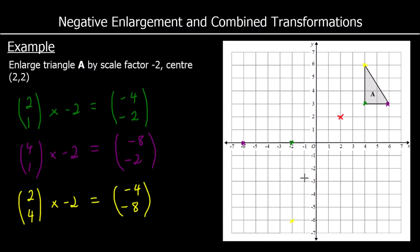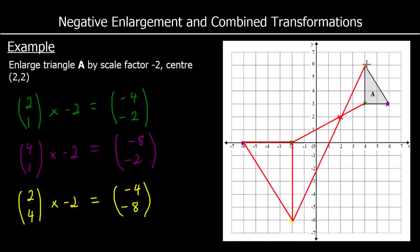And I can join these points up. This is my triangle enlarged by a scale factor of negative 2, centre at (2, 2). To check my answer, I can join up the two green points — they will go through the centre of enlargement. My two yellow points and my two purple points will also go through the centre of enlargement, so I know I've done it correctly.